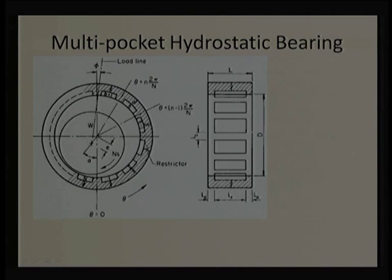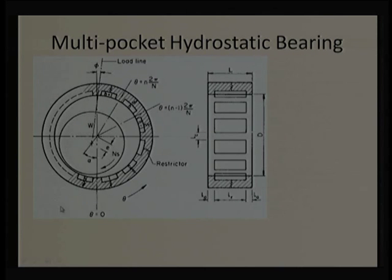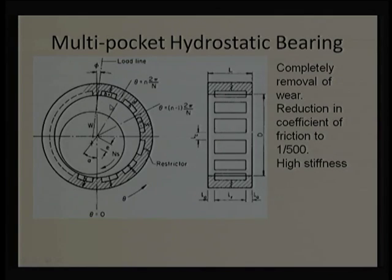We use even numbers of pockets so that forces from opposing pockets balance each other, making the control algorithm for shaft positioning simpler. Hydrostatic bearings completely eliminate wear since the shaft is fully levitated with no metal-to-metal contact. The coefficient of friction is about 1/500 of dry friction — a major advantage. Abrasion from liquid flow is also negligible since operating speeds are very low.